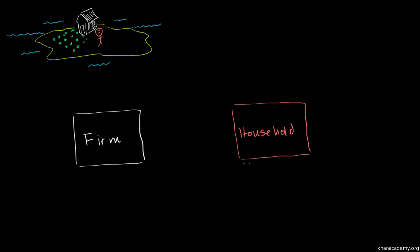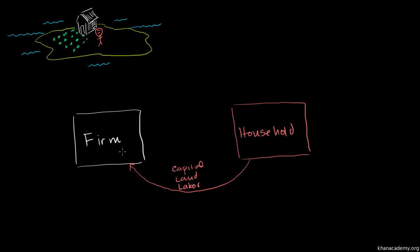He decides to set up a firm — a legal entity, some corporation. He is the household of exactly one person. And he decides to give multiple factors of production to the firm: capital, land, labor, and entrepreneurship, since he was the one who thought of this entrepreneurial activity.